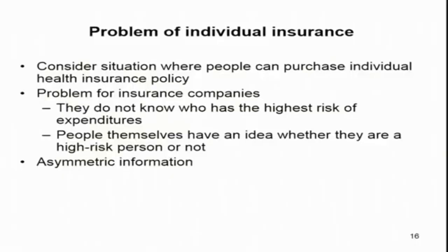Let us start with how this would happen in the individual insurance market — specifically the individual health insurance market. In an individual health insurance market, the problem for insurance companies is that they do not know who has the highest risk of health expenditure, or what the potential health risk of the prospective purchaser or consumer is.